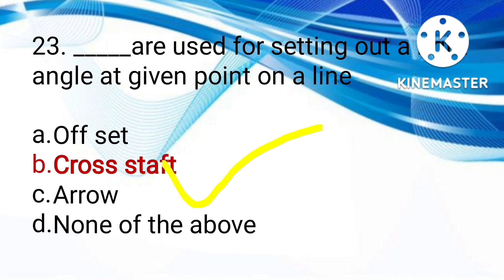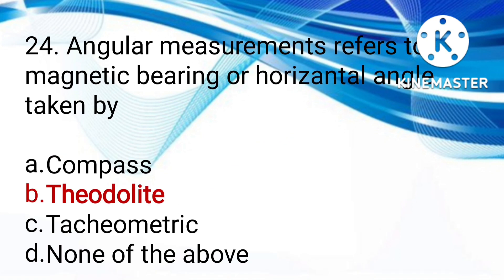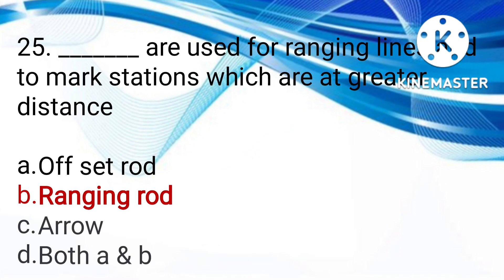Angular measurements refer to the magnetic bearing or horizontal angle taken by compass, theodolite, or clinometer. The answer is theodolite. Theodolite - what is used for ranging lines and to mark stations which are at greater distance? Offset rod, ranging rod, arrow, or both A and B. The answer is ranging rod.